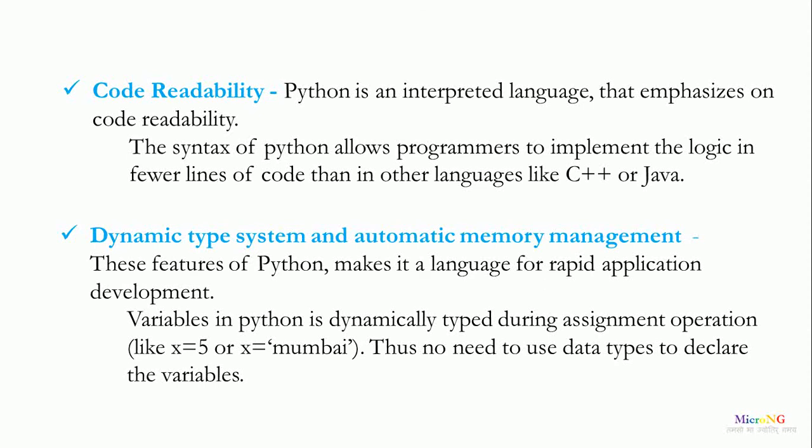Python's dynamic type system and automatic memory management make it a language suited for rapid application development. Variables in Python are dynamically typed during assignment operations. For example, when we write x = 5, the data type of x becomes an integer. Similarly, when we write x = 'Mumbai', the data type of x becomes a string. Thus, there is no need to declare data types for variables; the data type depends on the assignment of data to the variable.